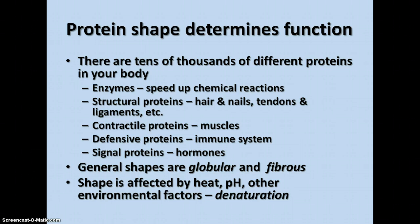The shapes of proteins fall into two general categories. One shape is globular, which as you can imagine is kind of a glob, and the other shape is fibrous, meaning long and skinny fibers.